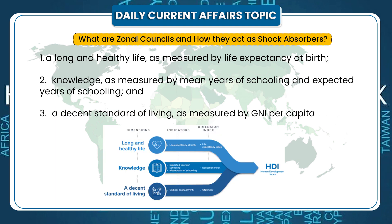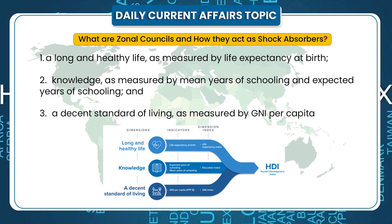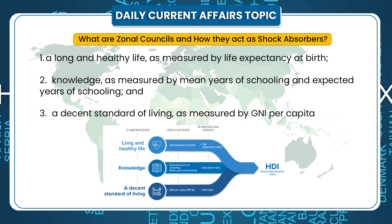The three dimensions are: 1. A long and healthy life, as measured by life expectancy at birth. 2. Knowledge, as measured by means of schooling and expected years of schooling. 3. A decent standard of living, as measured by gross national income per capita.